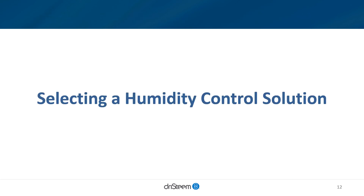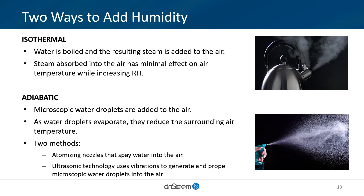Now that you know about the importance of humidity control, we will discuss the various humidity control solutions on the market today. When you need to increase the RH, you can choose between two different humidifier technologies. The first and most common is isothermal humidification. Isothermal humidifiers boil water to create steam, and the water vapor from the steam is then dispersed into the air. When steam is absorbed into the air, it has a minimal effect on air temperature. Isothermal humidification can achieve tight RH control, especially when indoor air temperatures are tightly controlled.